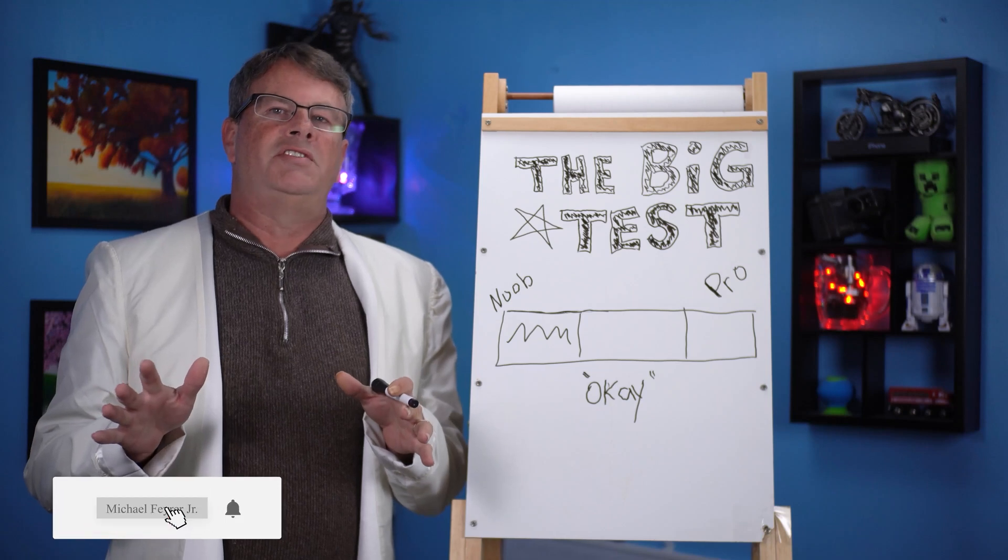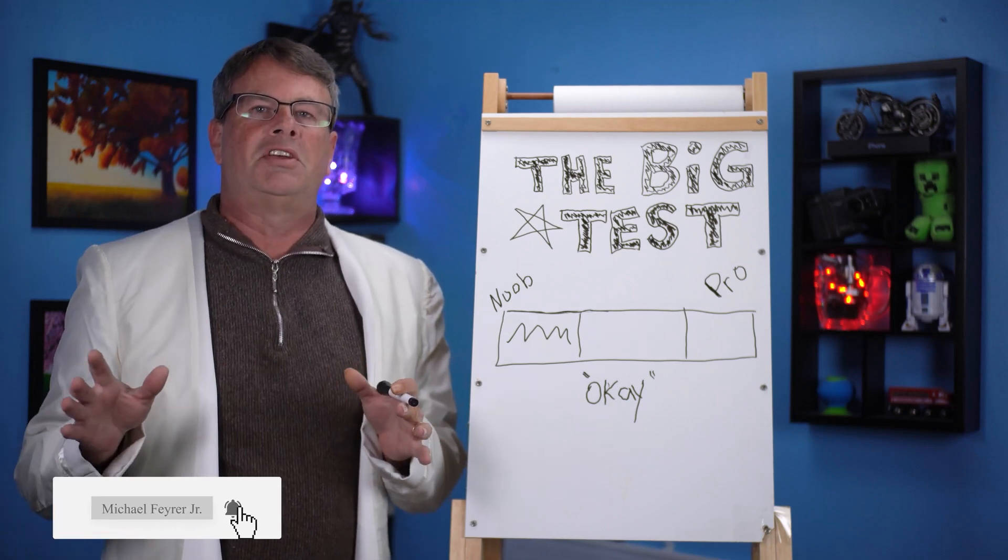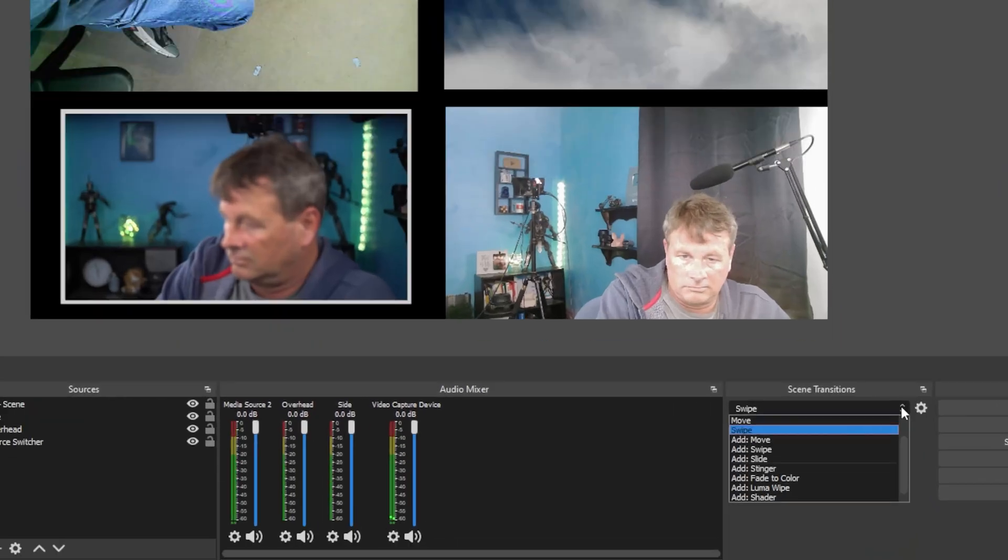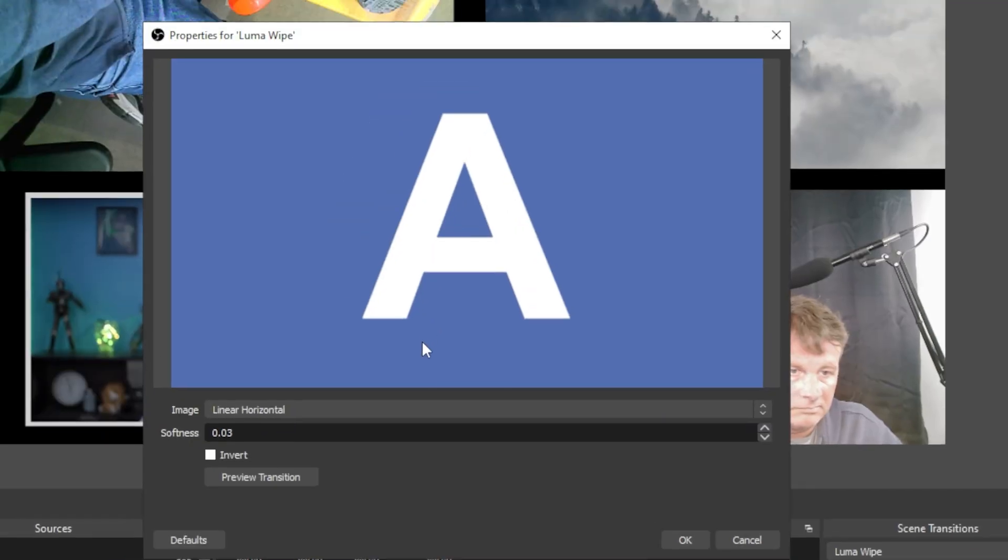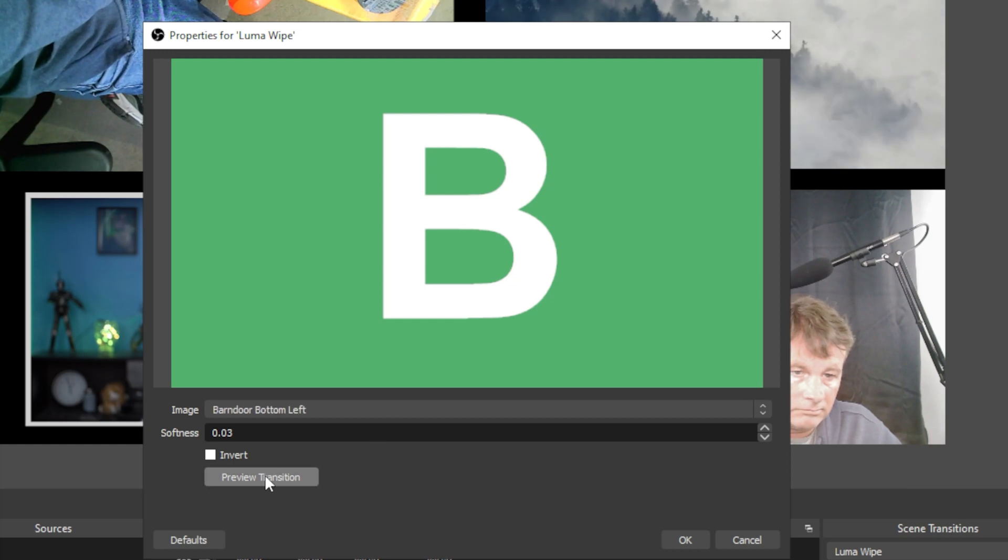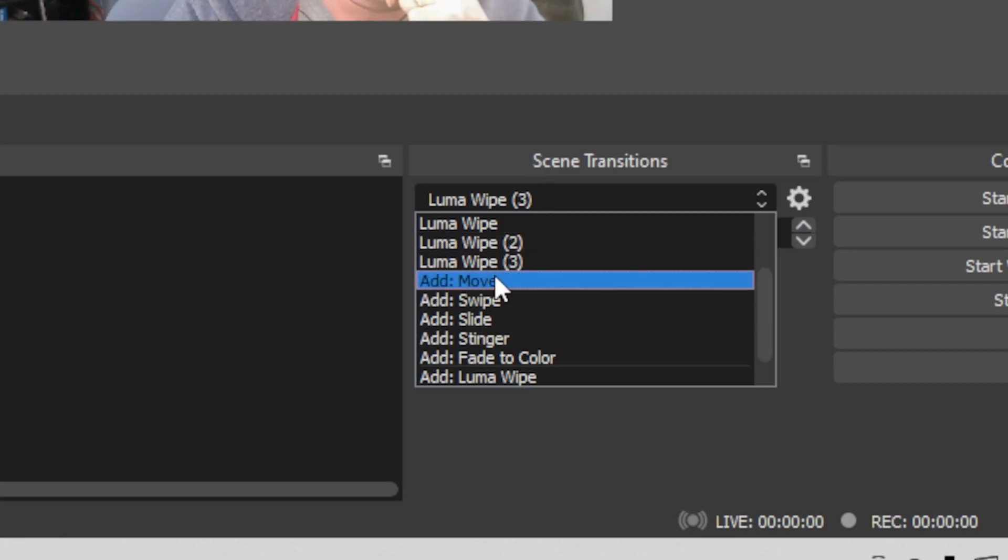There are so many built-in transitions in OBS you really don't need to create your own at this point. If we add a Luma Wipe, there's like 50 to choose from and you can preview each one and just select the one you like and you're set. And you can add as many as you want.